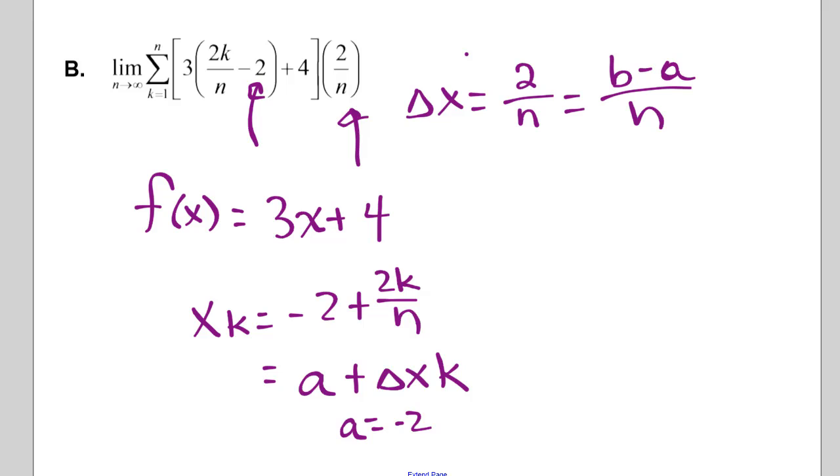Alright, so if we know that b minus a equals 2 and a is negative 2, then we get b plus 2 equals 2, or b equals 0.